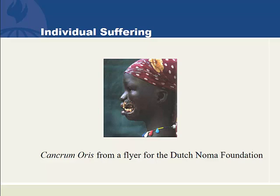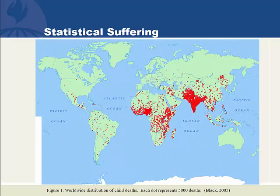We want to do something about this individual suffering. Another picture of suffering is what we do in economics where we represent suffering statistically through maps or graphical charts. Each dot on this map represents 5,000 child deaths.